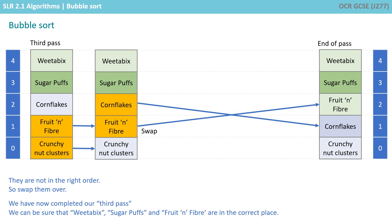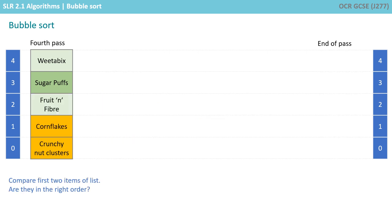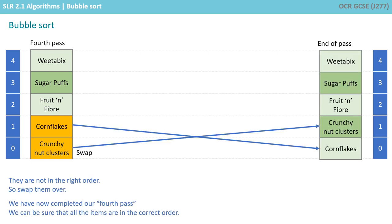We've now completed our third pass, and we can be sure that Weetabix, Sugar Puffs and Fruit and Fibre are all in the correct place. We simply repeat our algorithm on the unsorted part of the list. The unsorted part is only the first two items, so we compare them and ask: are they in the right order? They're not, so we swap them over.